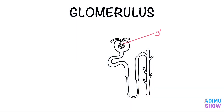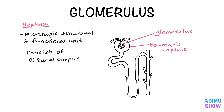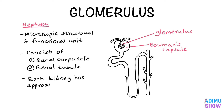Welcome to this video. Today I'm going to cover most of the things about the glomerulus in a very simple way. The nephron is the microscopic structural and functional unit of the kidney. It consists of the renal corpuscle and renal tubule. The renal corpuscle consists of the glomerulus and Bowman's capsule. Each kidney has approximately one million nephrons.